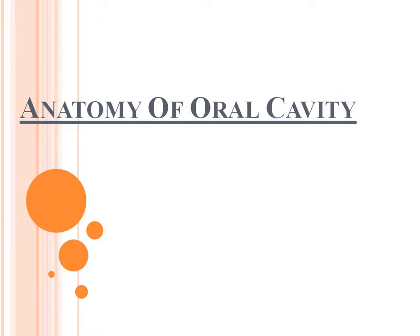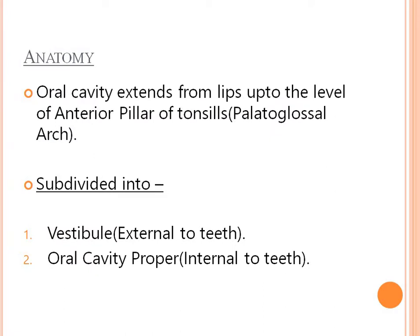Anatomy of the Oral Cavity. The oral cavity extends from the lip up to the level of the anterior pillars of the tonsils. It is subdivided into the vestibule, external to teeth, and the oral cavity proper, internal to teeth.